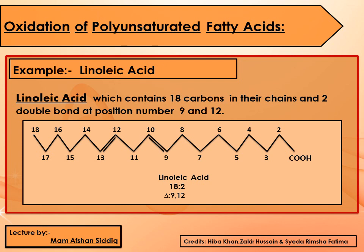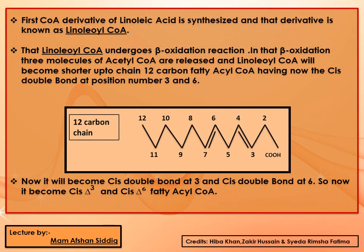Now, coming to polyunsaturated fatty acids — if we take the example of linoleic acid, which contains 18 carbons and has two double bonds, one at delta 9 and another at delta 12: in the first step, the CoA derivative of linoleic acid is synthesized, known as linoleoyl-CoA. This linoleoyl-CoA then undergoes beta oxidation.